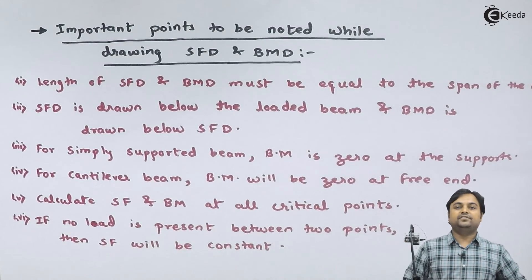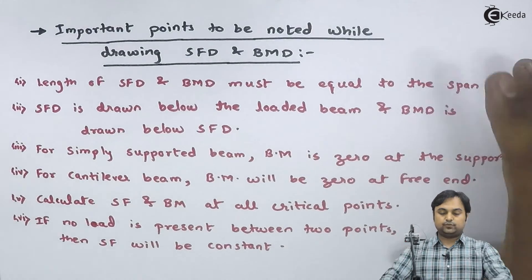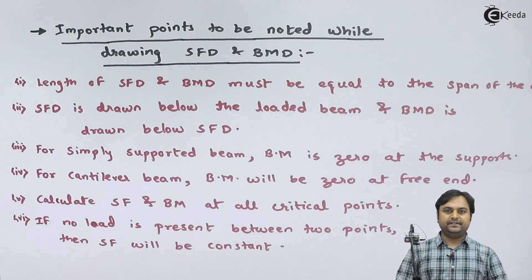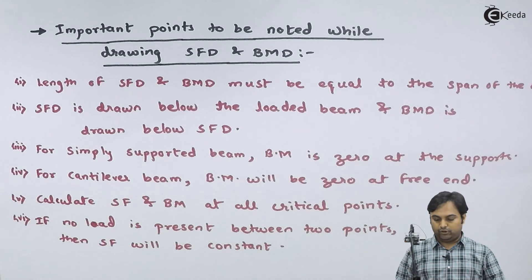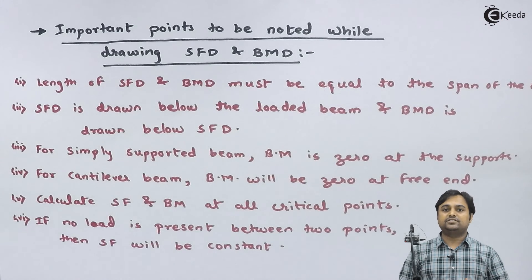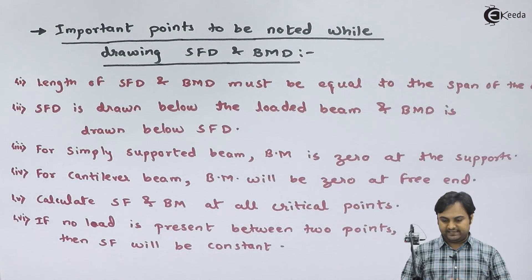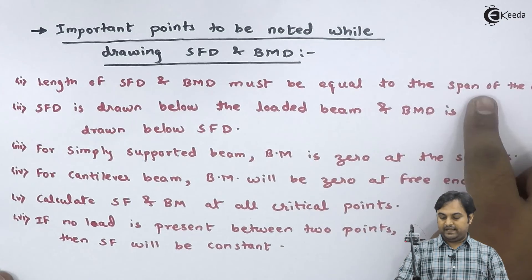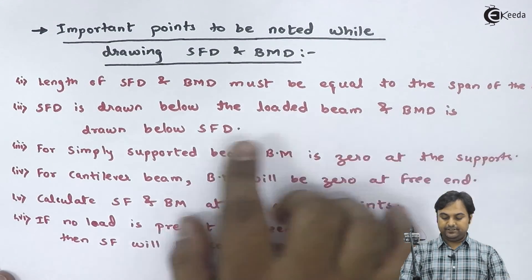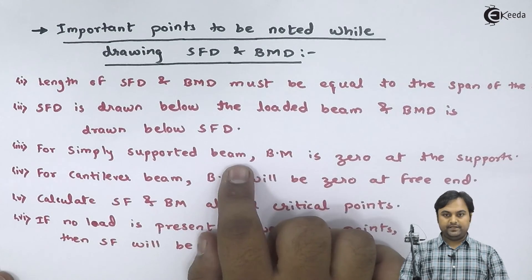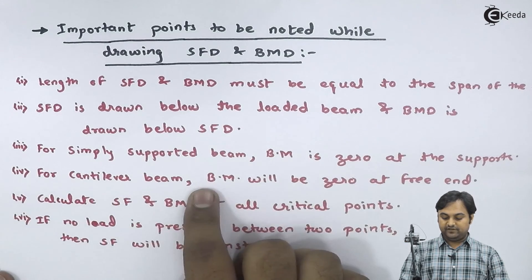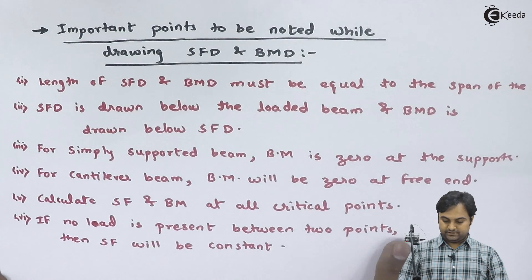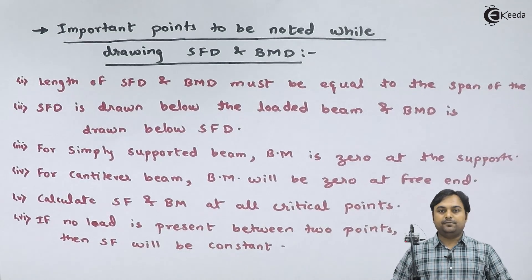These are the points we need to remember while drawing or solving any problems on SFD and BMD. To summarize: the length of SFD and BMD must equal the span of the beam; SFD is drawn below the loaded beam and BMD below the SFD; for simply supported beams BM is zero at supports; for cantilever beams BM is zero at the free end; calculate SF and BM at all critical points; and if no load is present between two points, SF will be constant.